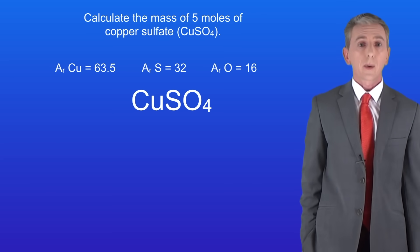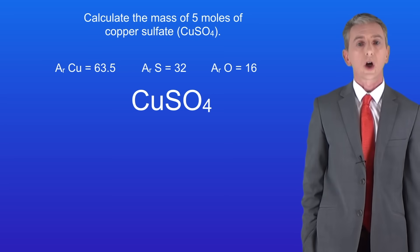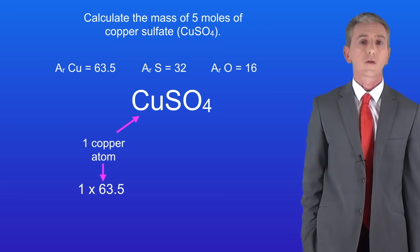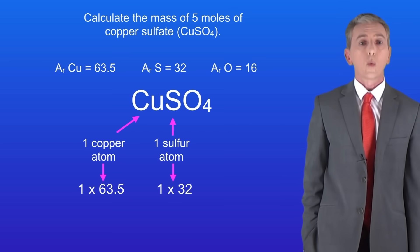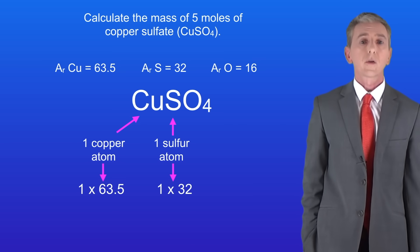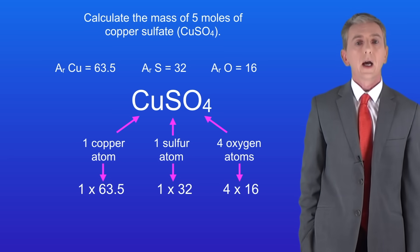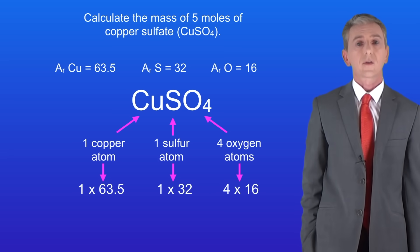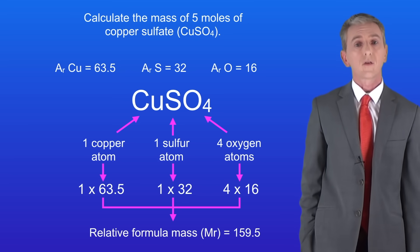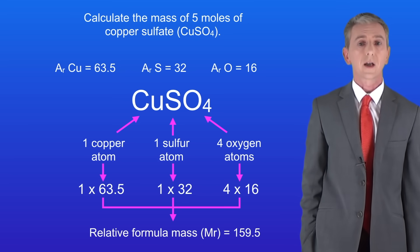We'll start by working out the relative formula mass for copper sulfate. We've got one atom of copper and copper has a relative atomic mass of 63.5. We've got one sulfur atom and sulfur has a relative atomic mass of 32. Finally we've got four oxygen atoms and oxygen has a relative atomic mass of 16. Adding these together gives us a relative formula mass for copper sulfate of 159.5.